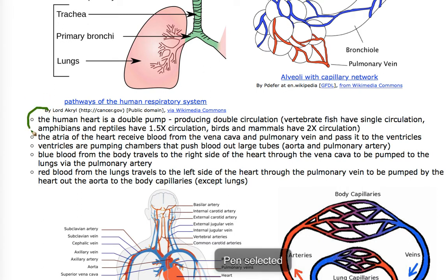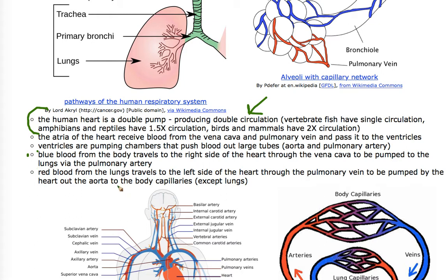The heart is a double pump — we have double circulation in mammals. Reptiles and amphibians have one-and-a-half circulations, birds and mammals have double circulation, and fish have single circulation. The human atria receive blood from either the lungs or the body, pass it to the ventricles, and the ventricles pump the blood out through the aorta or the pulmonary artery. Blue blood from the body travels to the right side of the heart through the vena cava to be pumped to the lungs via the pulmonary artery. Red blood from the lungs travels through the pulmonary vein to the left side of the heart and then out the aorta.